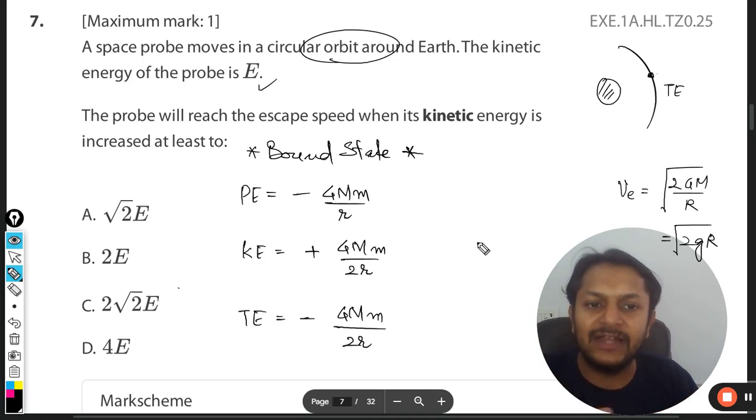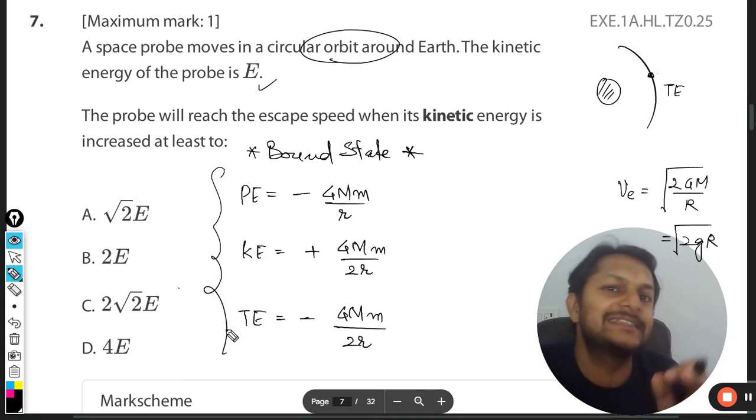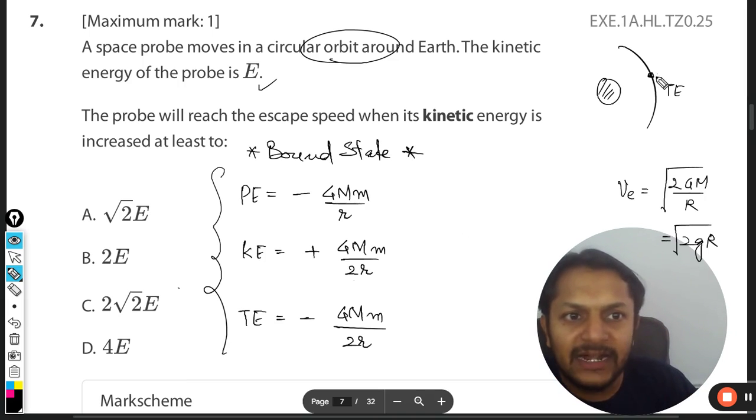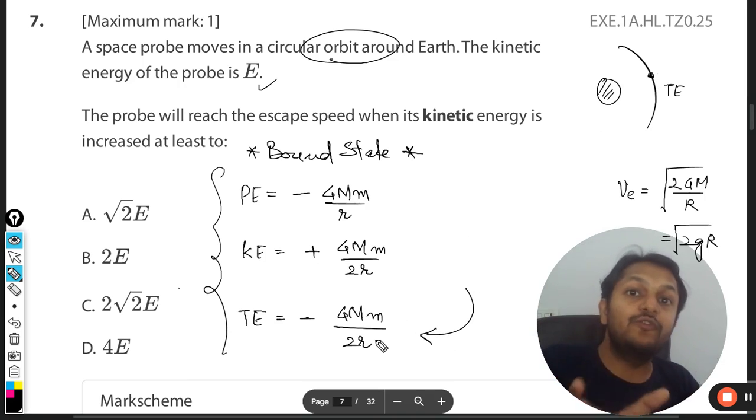Whenever we talk about satellite motion, these are the formulas that we have to first consider. Okay, so these are always valid if the satellite is moving around the planet. So these are always valid. Now it means that this satellite is having this much of the total energy.